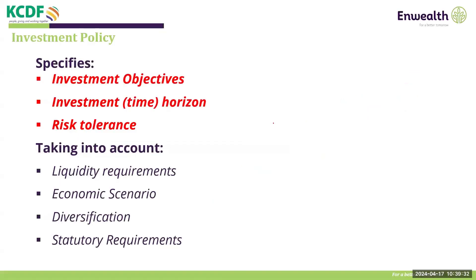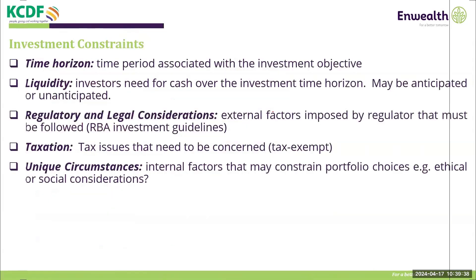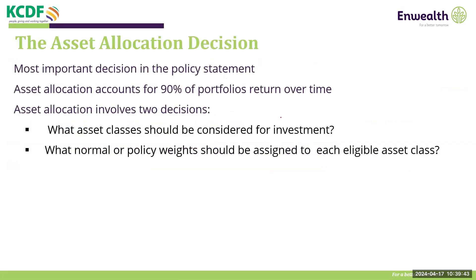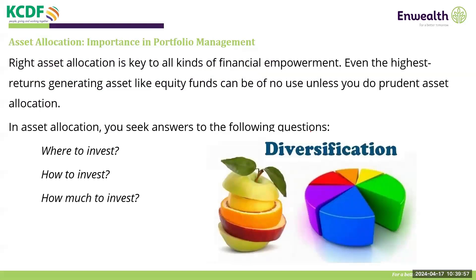The investment policy covers time horizon, liquidity, regulatory and taxation constraints. In terms of asset allocation, it is helpful to note that your asset allocation determines 90% of the returns that you make — that is very key. It has to do with where to invest, how to invest, and how much you have to invest. Under asset allocation is where you determine your diversification strategy.